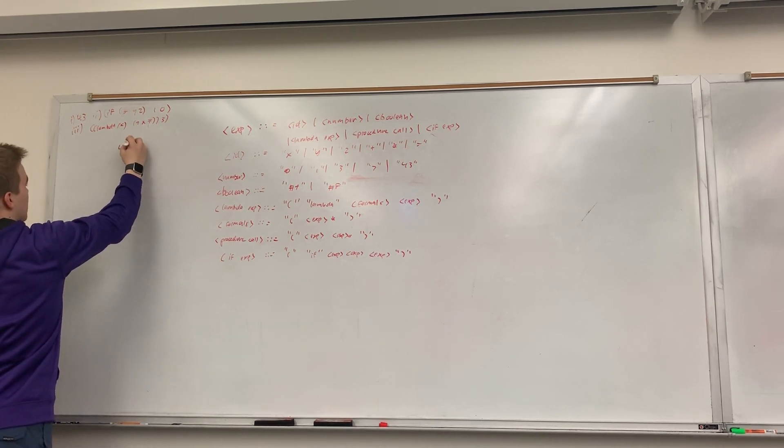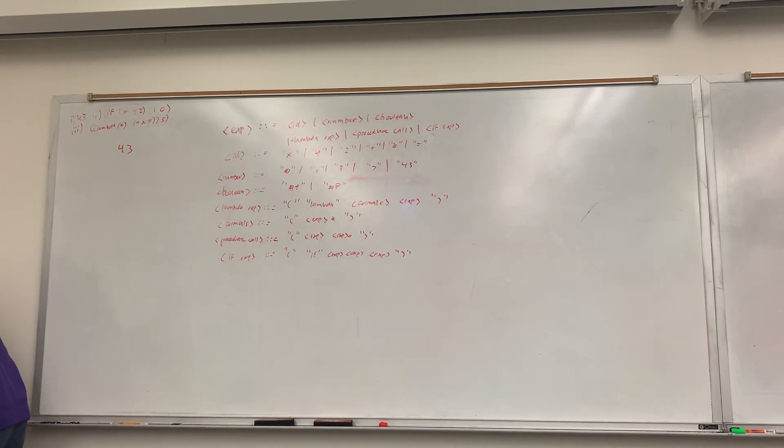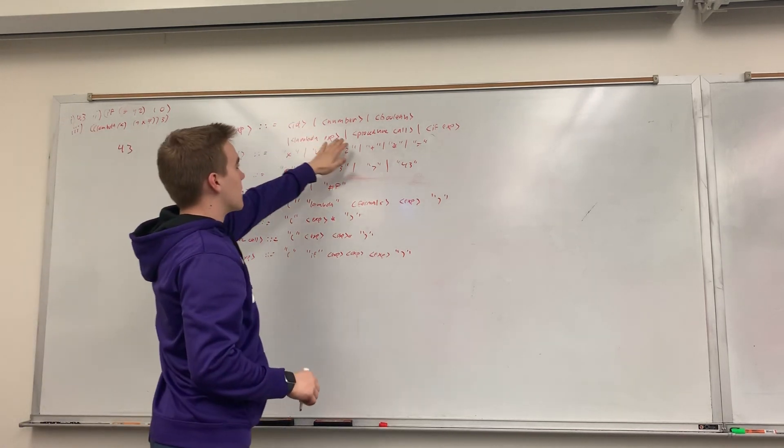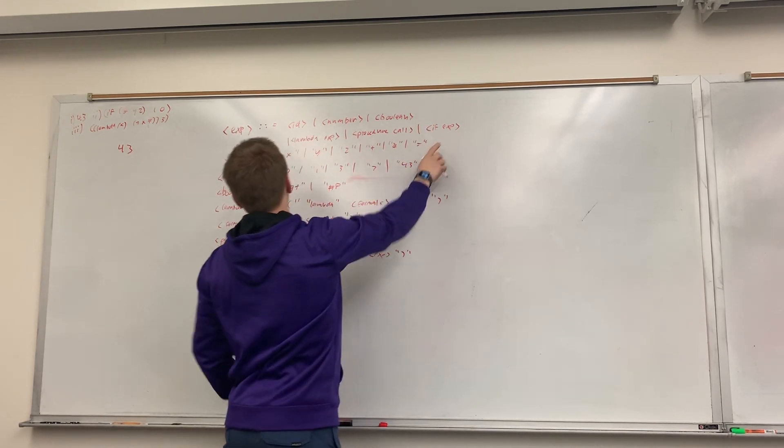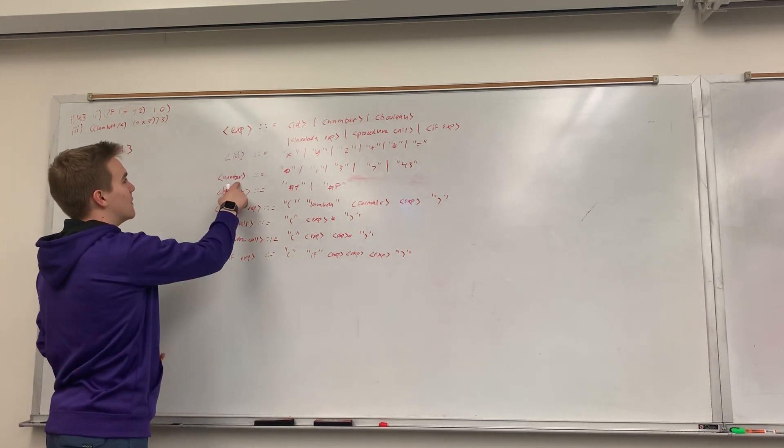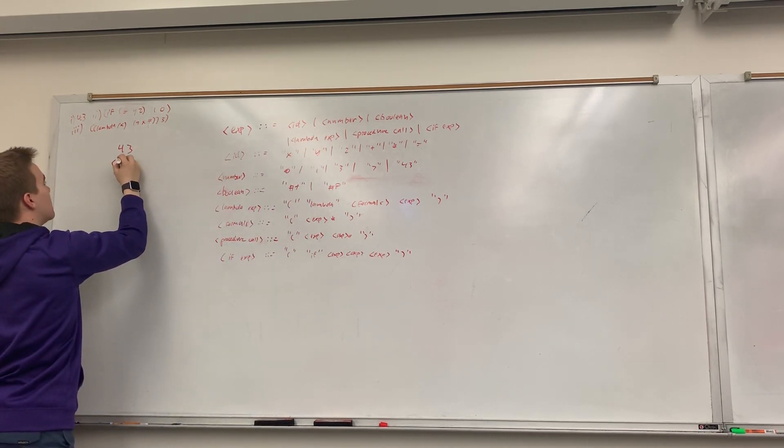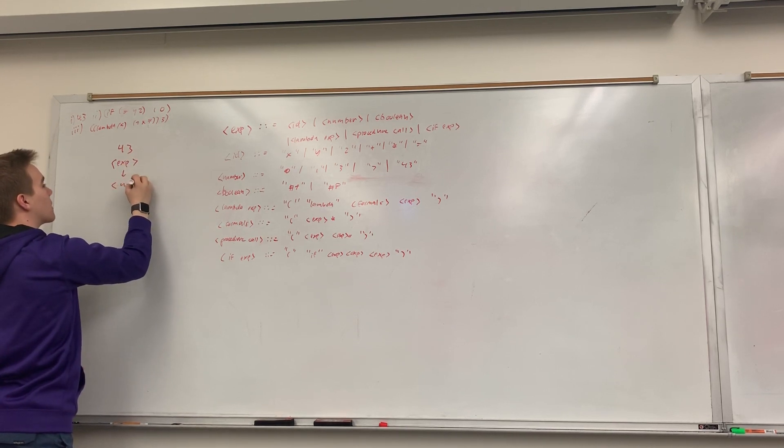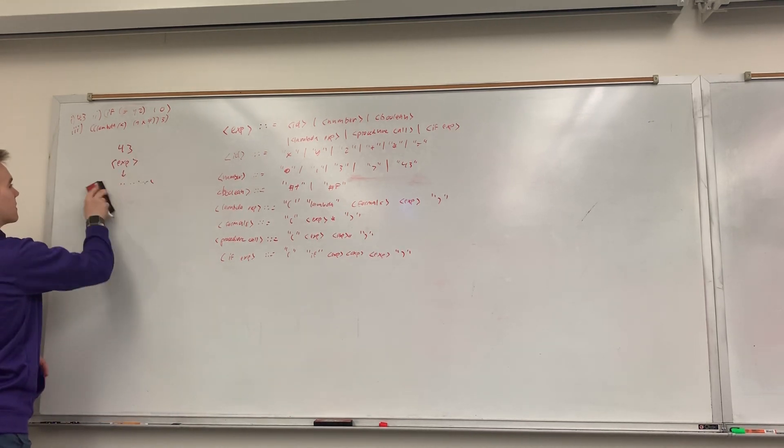So, i asks us to figure out how we can get 43. Oh, is there a word of this problem? Right, so an expression is an id or a number or a boolean or a lambda expression or a procedure call or an if expression. And it's asking us, from expression, how can we get 43? Well, that's pretty easy. We just need it to be a number. An expression can be a number. So, I would say it's maybe something like exp goes to number goes to 43. Easy enough, right? I think they got harder.